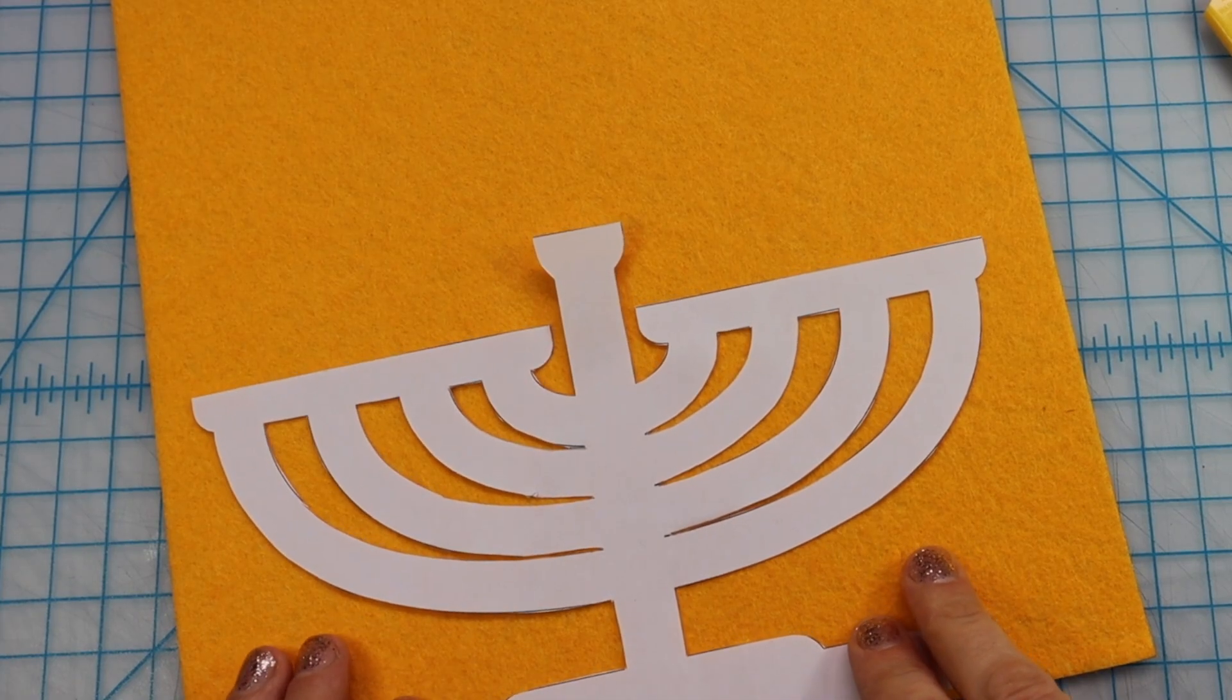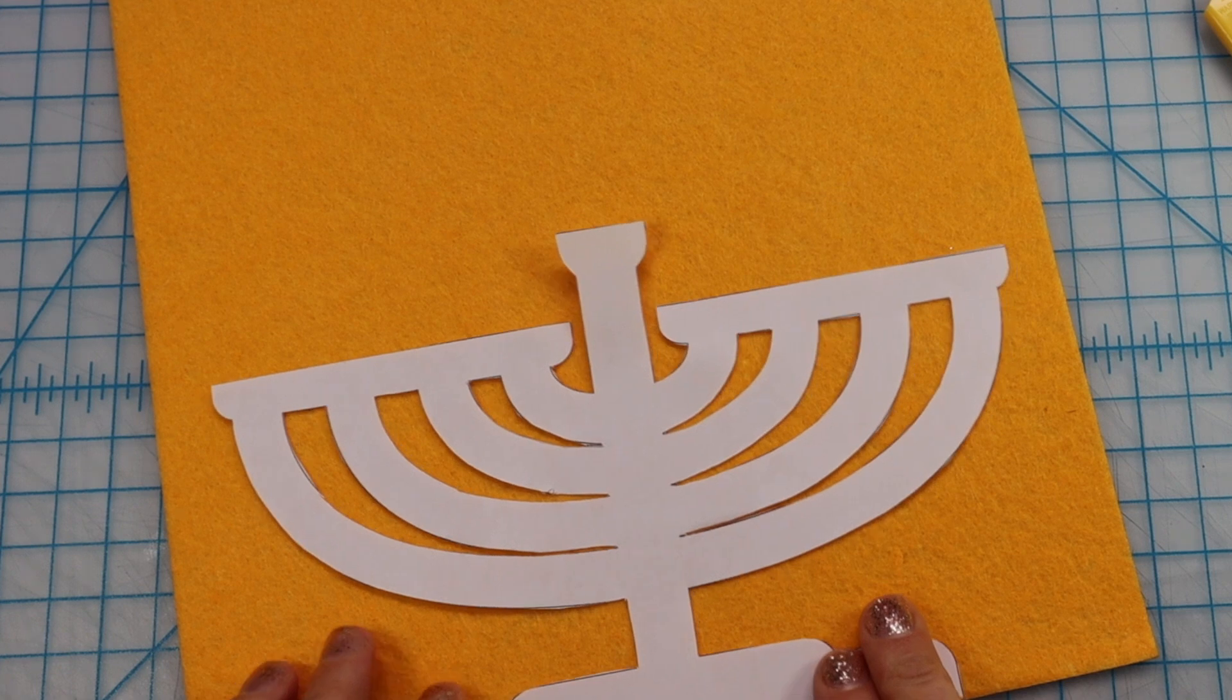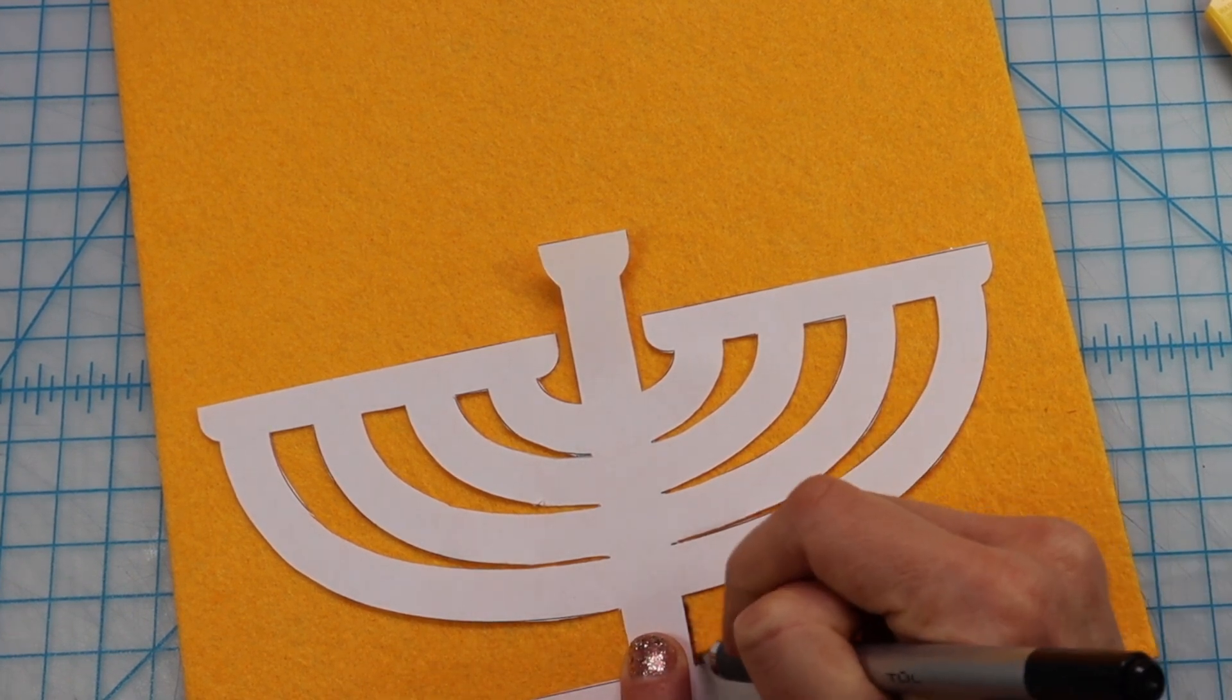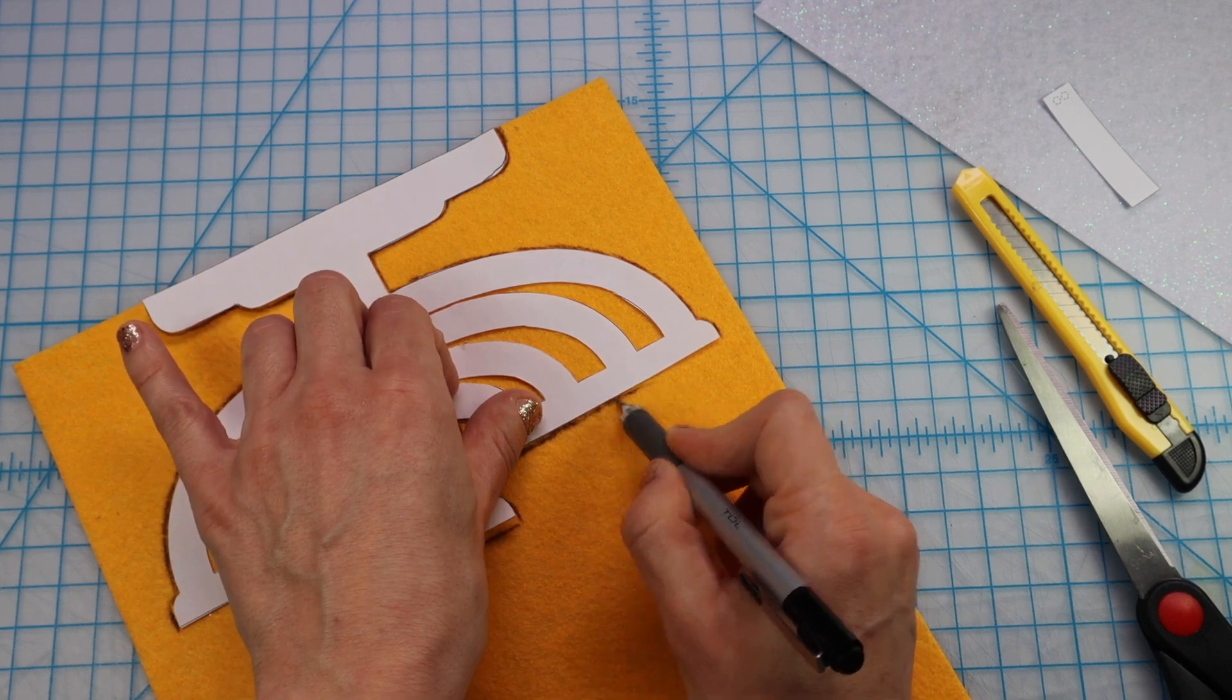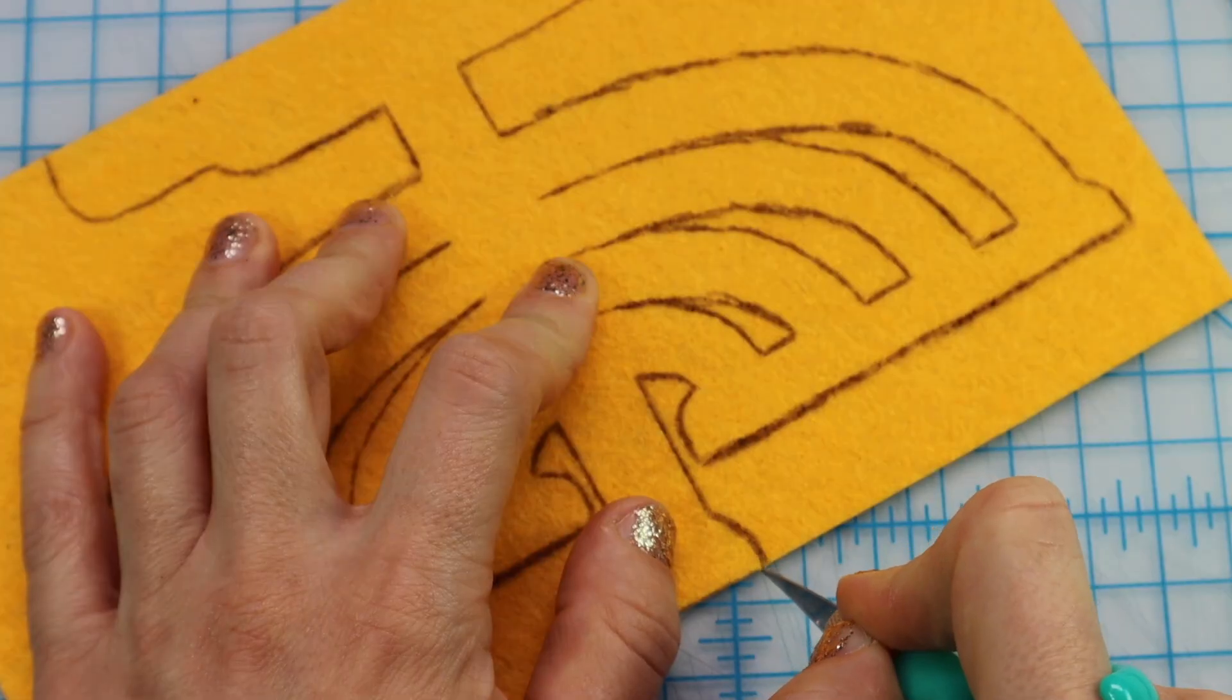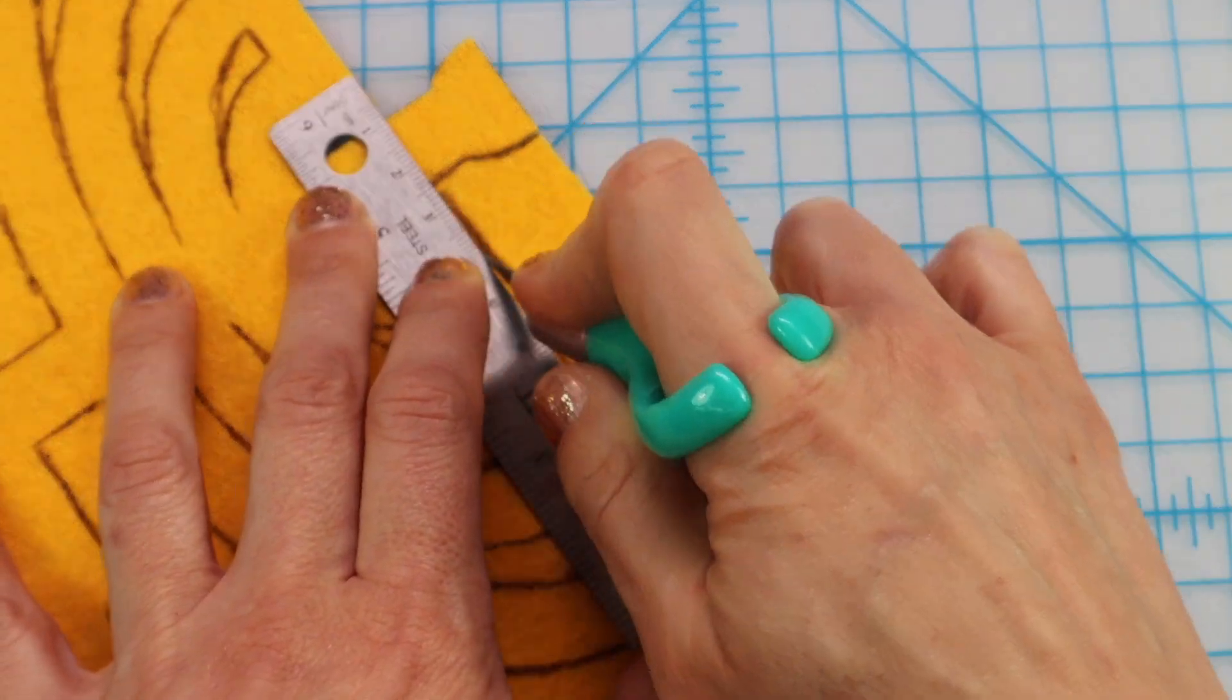And then I will trace my template onto the back of the felt. This is shiny side down. I'm just going to use a ballpoint pen because that worked on this felt, but you might want to test what works on the felt that you bought. I'm just going to keep drawing this template on. And now I will cut it out. And if you have one using a ruler or a straight edge to make these straight cuts is always helpful.